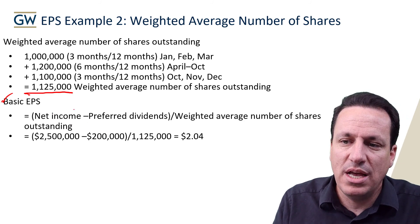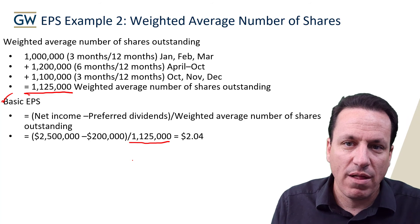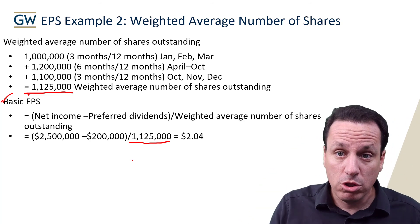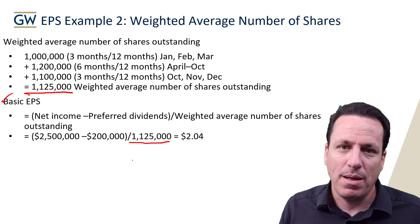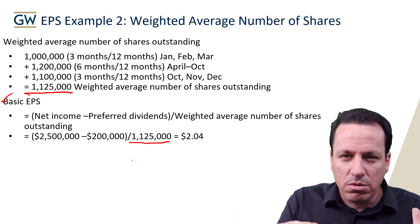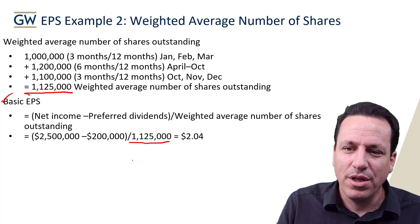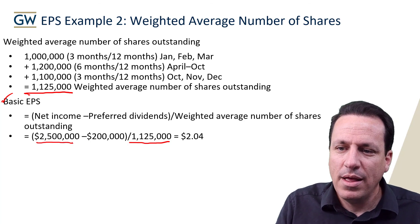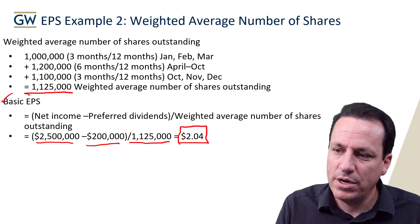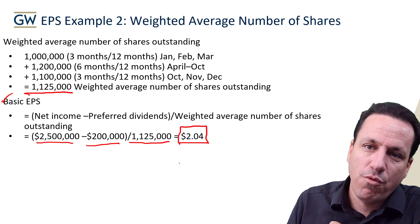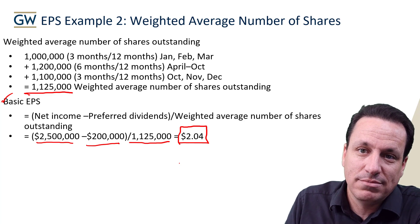Basic EPS requires net income minus preferred dividends over weighted average shares. One of the biggest problems students have is they focus on weighted average shares, put that number in, and think they're done. They forget the preferred dividends. You have to remember it's net income less preferred dividends, divided by the weighted average shares outstanding. If we do that, we get a basic earnings per share of $2.04. That's the basic earnings per share. So that's how you calculate the weighted average number of shares outstanding. Look forward to more examples — it increases in complexity.